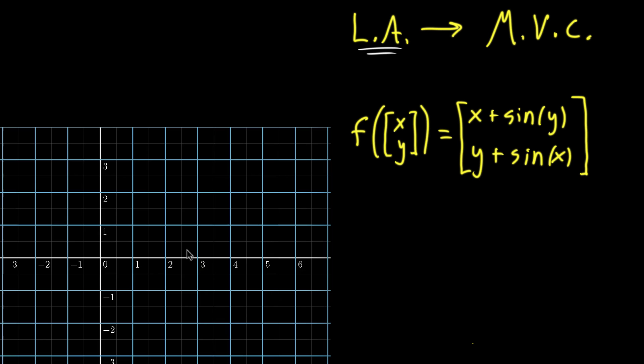I'm going to tell the computer, take every single point on this blue grid here, and if that point is xy, I want you to move it over to the point x plus sine of y, y plus sine of x. And here's what that looks like.